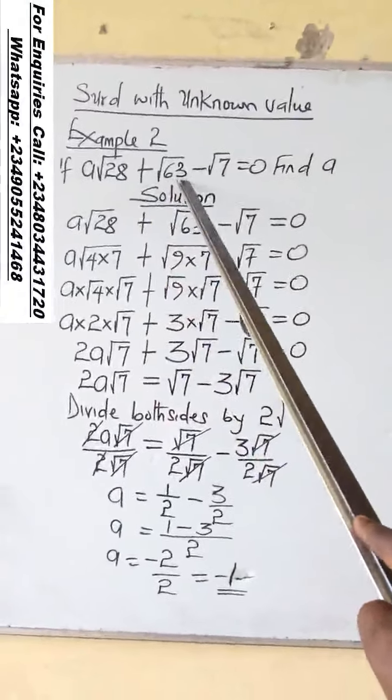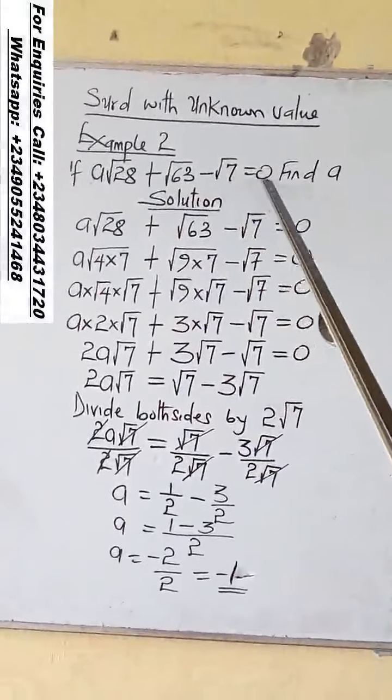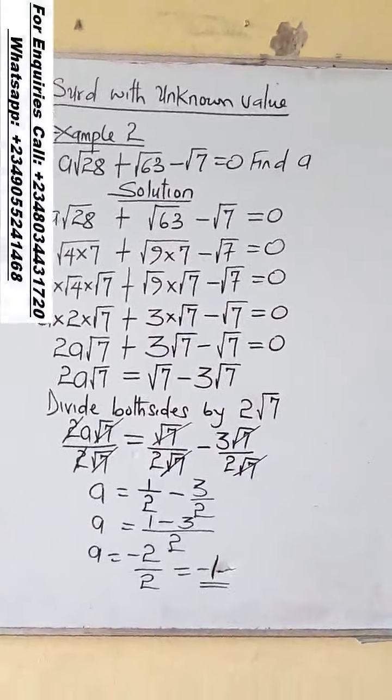If A root 28 plus root 63 minus root 7 equals 0, find the value of A.